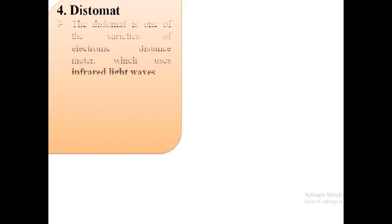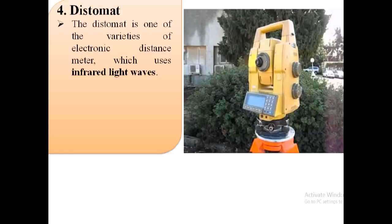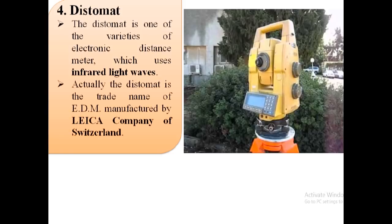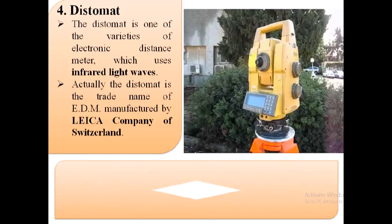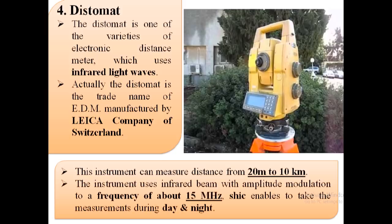Distomate: The distomate is one of the varieties of electronic distance meter which uses infrared light waves. The distomate is the trade name of EDM manufactured by Lika company of Switzerland. This instrument can measure distance from 20 metres to 10 km. The instrument uses infrared beam with amplitude modulation to a frequency of about 15 MHz. This enables measurements to be taken during day and night.